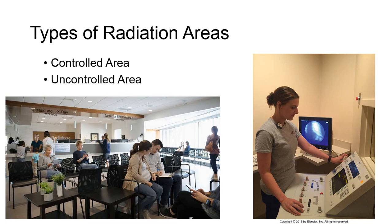An uncontrolled area is a portion of the imaging department which non-radiation workers such as receptionists and managers, waiting patients, or the general public can be expected to regularly occupy. Structural barriers here must contain shielding sufficient to keep exposure rates below 20 microgray per week. Examples include the hallways outside of the x-ray rooms or areas immediately adjacent to the exam rooms.